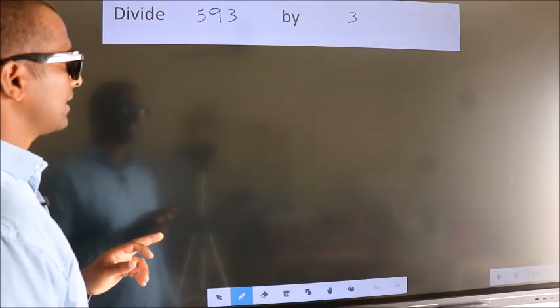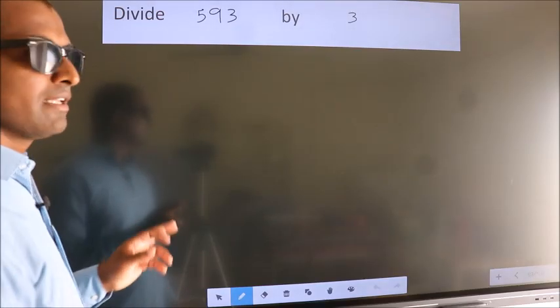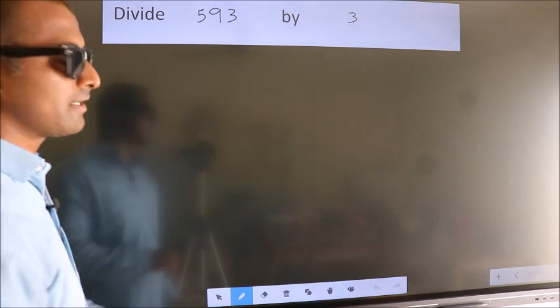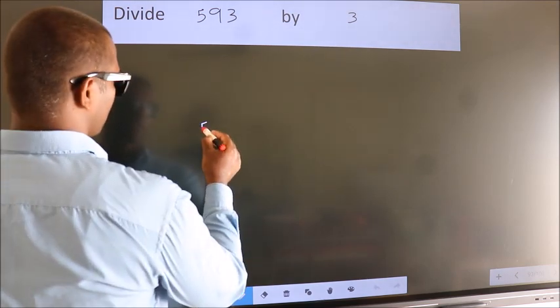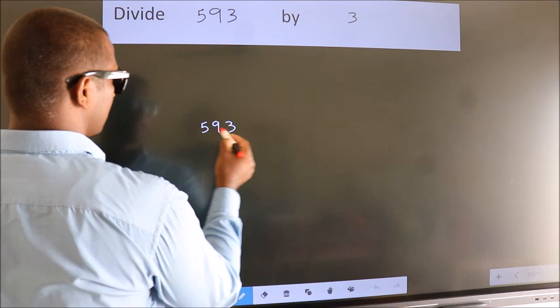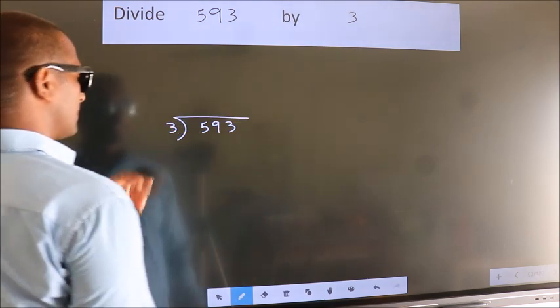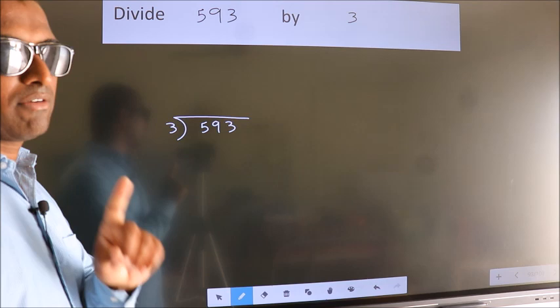Divide 593 by 3. To do this division, we should frame it in this way. 593 here, 3 here. This is your step 1.